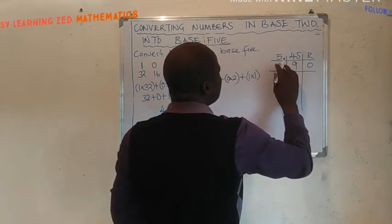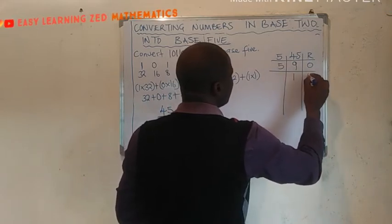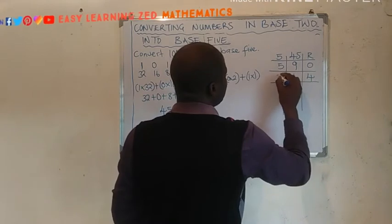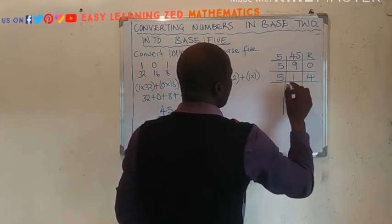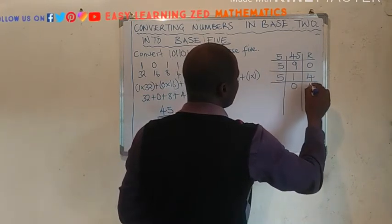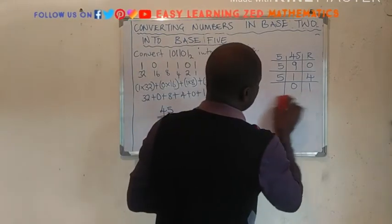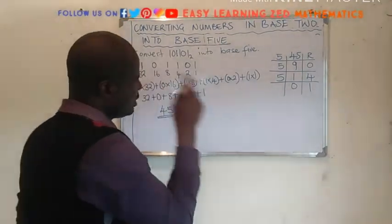How many times 5 can go into 9? It's 1. Remainder, 4. How many times 5 can go into 1? We are saying 0. Remainder, 1. All right. Now, let's write the answer.